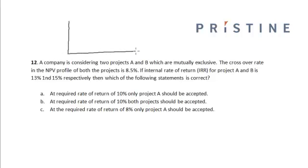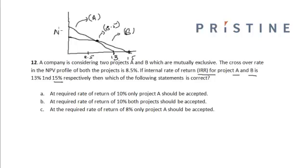Let's say this is 8.5%, this is my 13%, and this is my 15%. So the internal rate of return for project A is 13%, so project A is given by this line. Let's say project A. And the internal rate of return for project B is 15%, so this is project B. And this crossover rate is 8.5%.